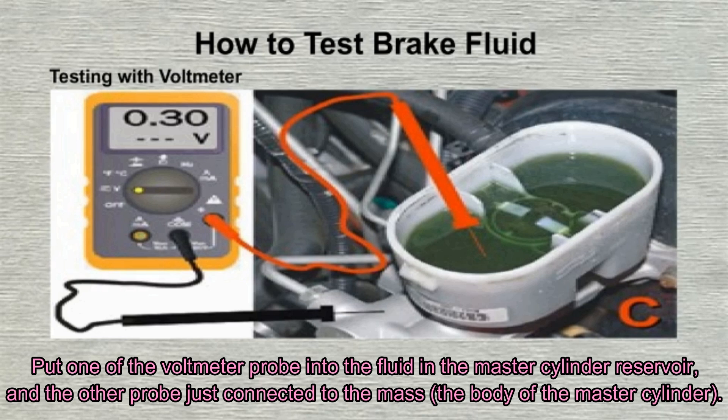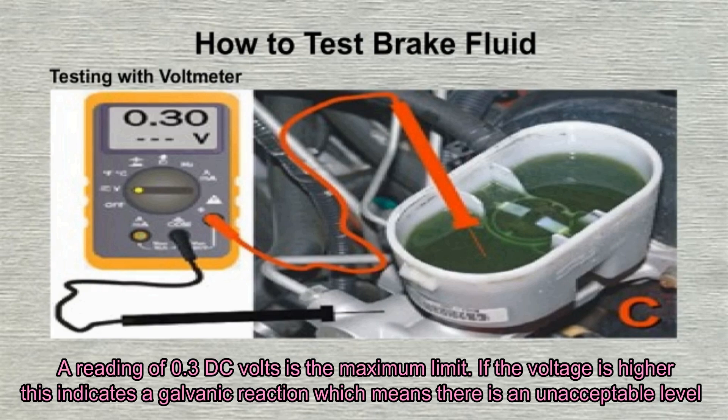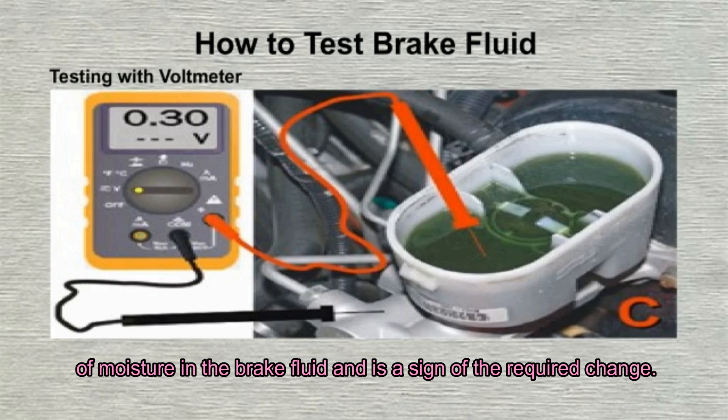A voltmeter can also be used to measure the conductivity of the brake fluid in the master cylinder reservoir. Put one voltmeter probe into the fluid in the master cylinder reservoir, and connect the other probe to the mass — the body of the master cylinder. A reading of 0.3 DC volts is the maximum limit. If the voltage is higher, this indicates a galvanic reaction, meaning there is an unacceptable level of moisture in the brake fluid and a change is required.